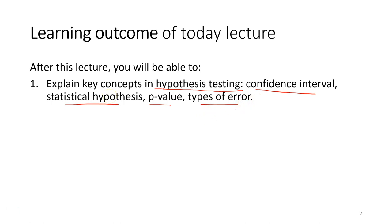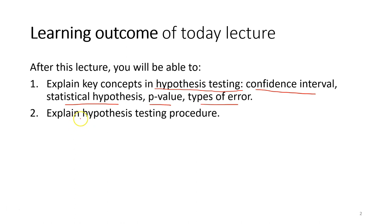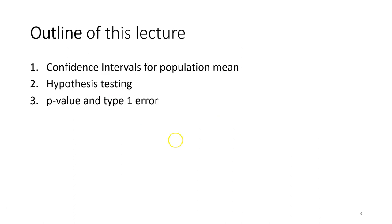You might have seen these terms before, so it's very important that you understand the meaning of each of them. After that we are more or less ready to go. We're going to study in detail the step-by-step procedure when we want to do hypothesis testing — this procedure applies regardless of which statistical analysis you use. This is the outline of the lecture: first we talk about confidence interval for population mean, then hypothesis testing, and after that p-value and type one error.